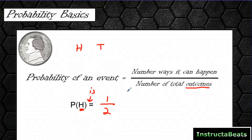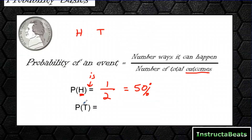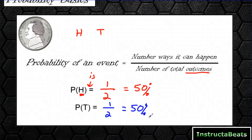Many of you probably already knew that — there's a 50-50 chance it's going to land on heads. One-half equals 50%, so there's a 50% chance that when we flip the coin it would land on heads. We can do the same thing for tails. There are still two total outcomes, the numerator is still one because there's only one way it can land on tails — again 50%. So there's a 50% chance it lands on heads and a 50% chance it lands on tails.